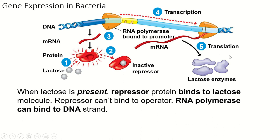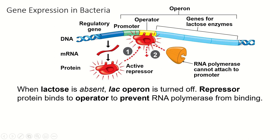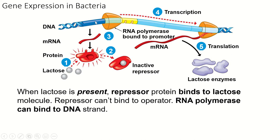So without lactose present, the genes never get transcribed because the repressor is bound to the operator and RNA polymerase can't do its job. When milk is present, the lactose binds to the repressor, the repressor lets go of the operator, RNA polymerase binds to the DNA, transcribes the genes, and the RNA is then used to make the enzymes. Once the enzymes have gotten rid of all of the lactose that was present, the repressor goes back to its job of binding to the DNA. So that's gene expression in bacteria.